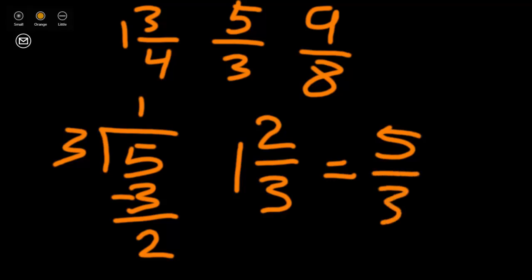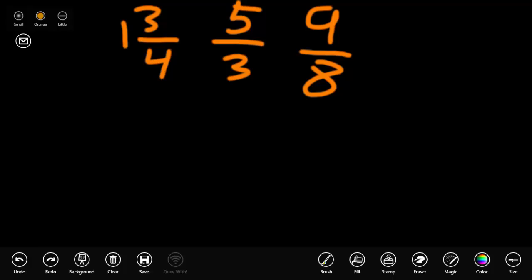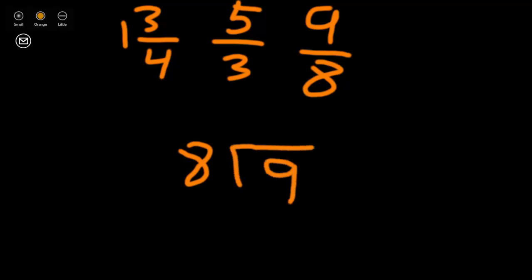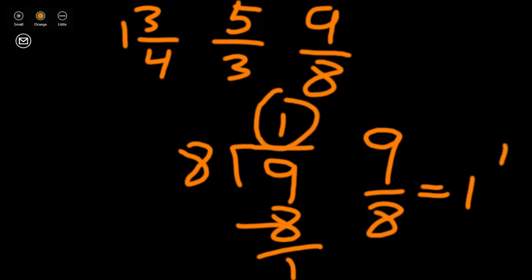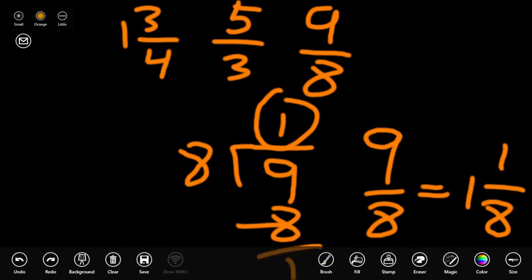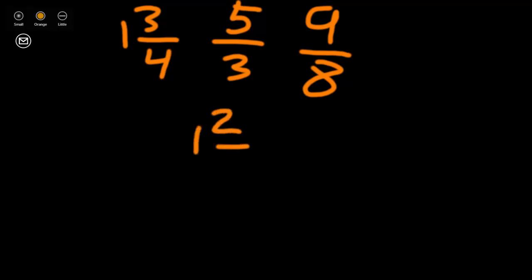Let's look at our next improper fraction, 9/8ths. We'll do the same thing. 8 goes into 9 equally one time, which leaves us 1 left over. Therefore, our mixed number for 9/8ths would be 1 and 1/8th — our denominator stays the same. So now that we can write all 3 fractions as mixed numbers: 5/3rds was changed to 1 and 2/3rds, and 9/8ths was changed to 1 and 1/8th.